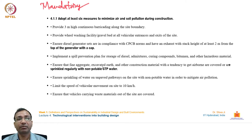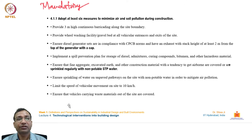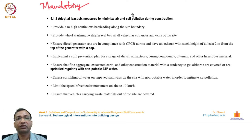Additional mandatory construction management measures include: sprinkling water on unpaved pathways with non-potable water to mitigate air pollution; limiting vehicular speed on site to 10 kmph; and ensuring vehicles carrying waste out of the site are covered. These points address preventing pollution in all its forms — air and soil — during construction.